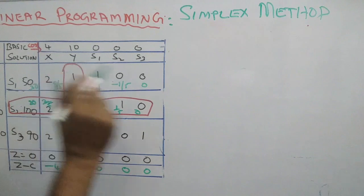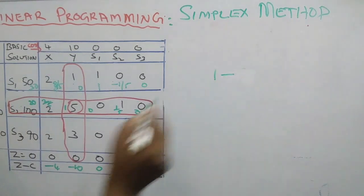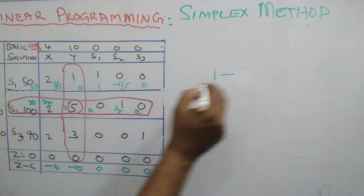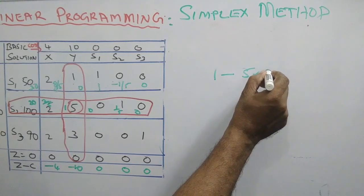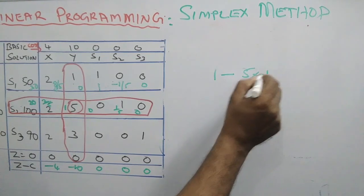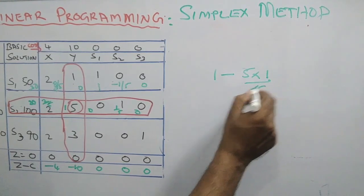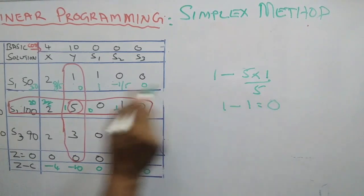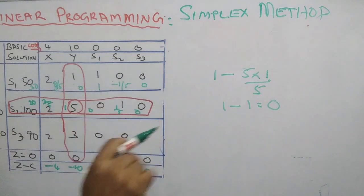How will you calculate this number? The existing number 1, minus the corresponding number of the pivot row 5, into the corresponding number of the pivot column 1, divided by the key number 5 — that is 1 minus 1, equal to 0. This is 0.